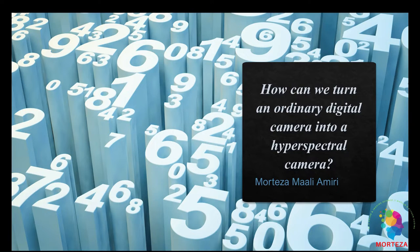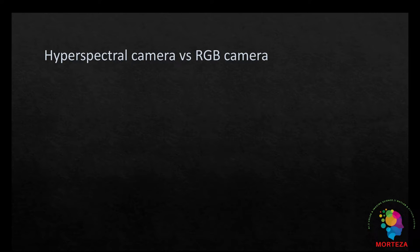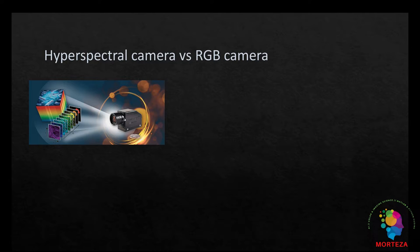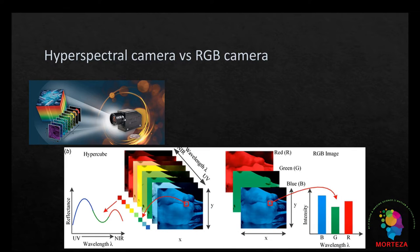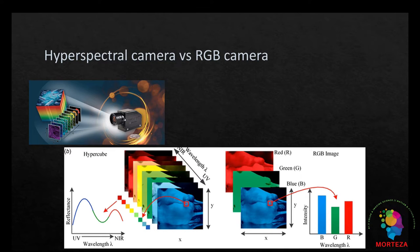In this video I want to talk about how to turn an ordinary digital camera into a hyperspectral camera using deep learning. We have talked about this topic in a prior video, but we used a classic method. Let's remind ourselves what we mean by this. Hyperspectral cameras are capable of capturing the spectral reflectance information of objects — the camera captures an image where each pixel contains spectral reflectance information. This spectral reflectance is very useful for identifying the type of material or object. Hyperspectral cameras are usually very expensive and not everyone can afford them.